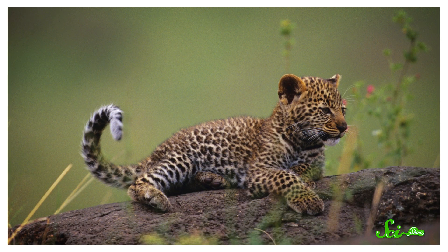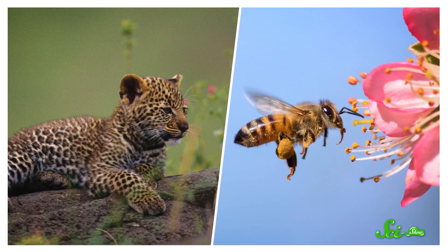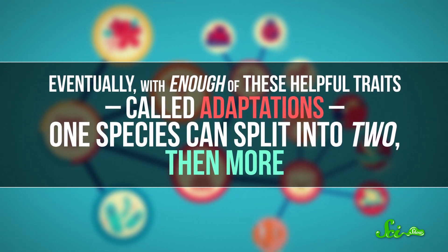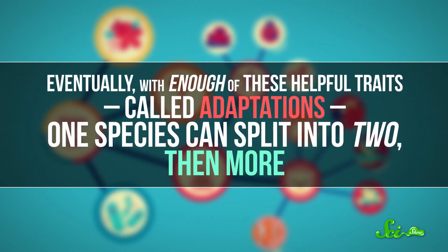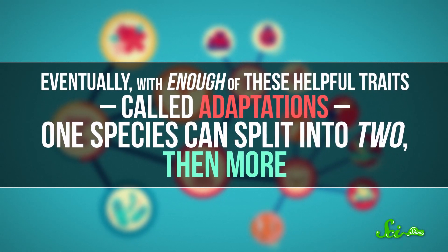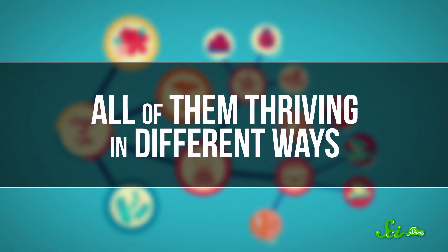Over lots of generations, organisms in one species can build up random DNA mutations that happen to help them survive better in their environment, like a fur color that helps baby animals hide from predators, or a sweeter nectar that helps a plant attract more pollinators. Eventually, with enough of these helpful traits, called adaptations, one species can split into two, then more, all of them thriving in different ways.